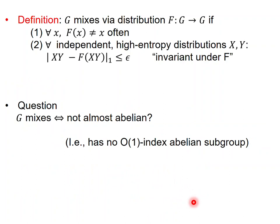The question that I asked at the beginning of this talk can now be phrased as follows: is it true that g mixes if and only if it is not almost abelian, in other words if the group does not have an abelian subgroup of constant index?